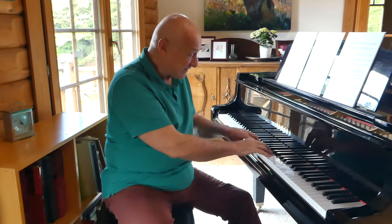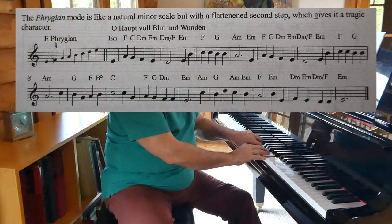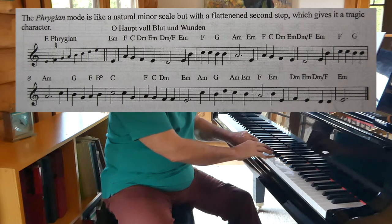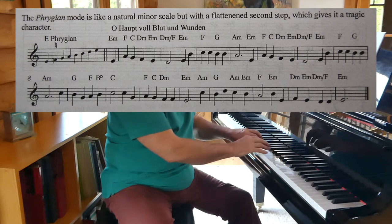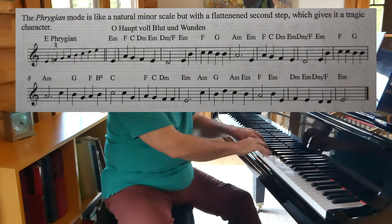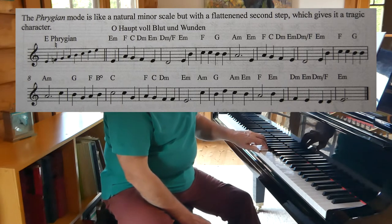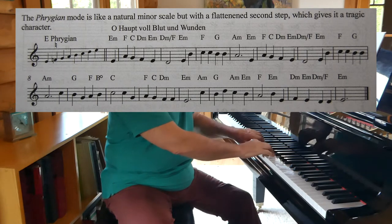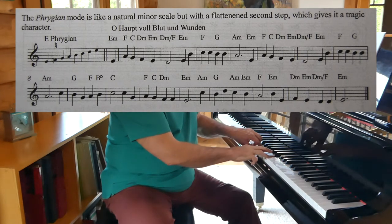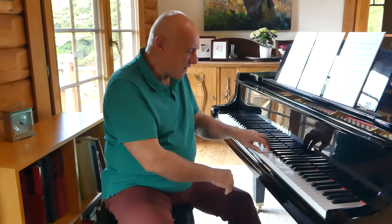Then we have the Phrygian scale, which goes from E to E on the white notes. You can transpose it into any other key as well. The intervals are the most important thing, and the most important thing here is the second interval. Otherwise it behaves like a minor scale, but this second interval gives it a tragic character.